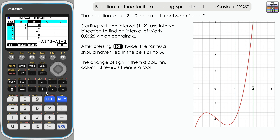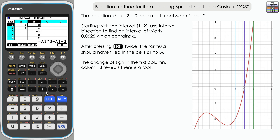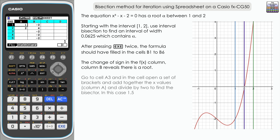Let's double check with the graph. The red curve is the graph of the function, and we've got two straight lines representing the initial values 1 and 2. We're looking at the interval between them — you can see the root is located there, and the values of negative 2 and 4 are shown. What we need to do now is split that interval between 1 and 2 in half and see which side of that split the root lies.